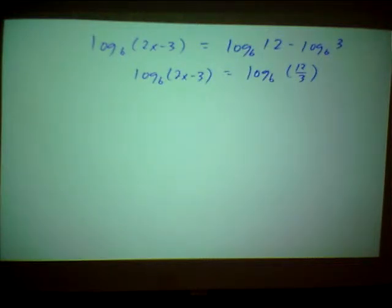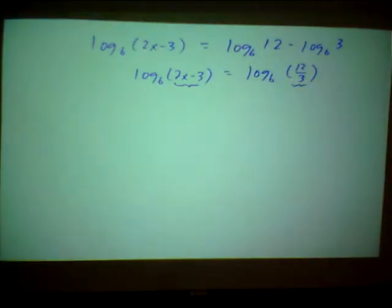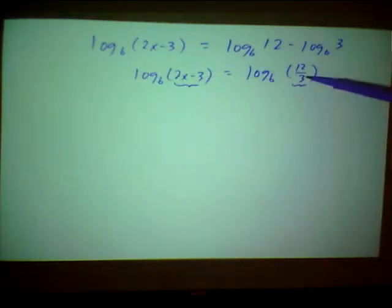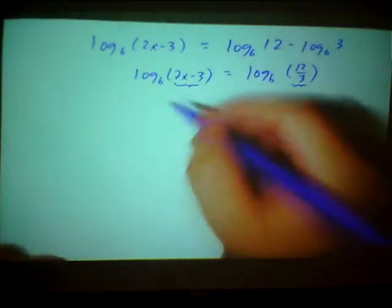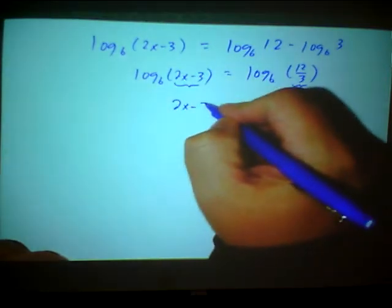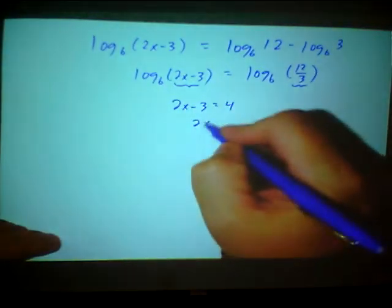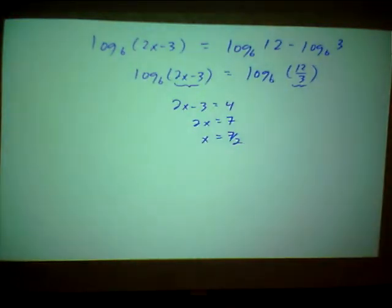Now, when you combine the logs on the left side into one log and the logs on the right side into one log, then you simply can set these arguments equal to each other. Hopefully, it's very obvious by just looking. If I have the log of something over here equals a log of something over here, that's only going to be true if the arguments, if the stuff inside the logs are equal. So I can just say 2x minus 3 must equal 4. And now I solve for x. 2x equals 7. x is 7 halves. That's my proposed solution.